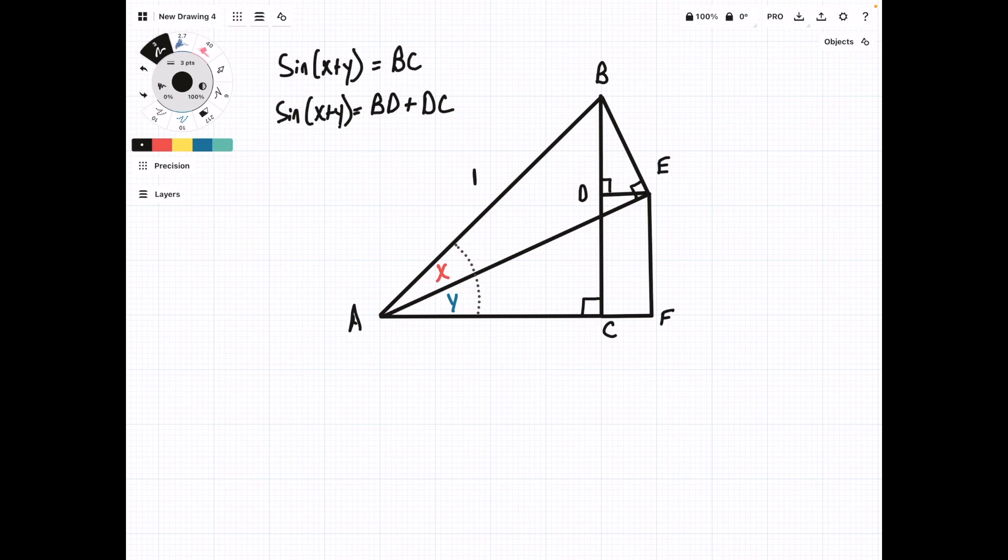We're going to start by looking at this triangle up here, ABE, and we're going to find both the sine of X and the cosine of X. So the sine of X opposite over hypotenuse is BE over 1, and then the cosine of X is equal to the adjacent side, AE over 1.